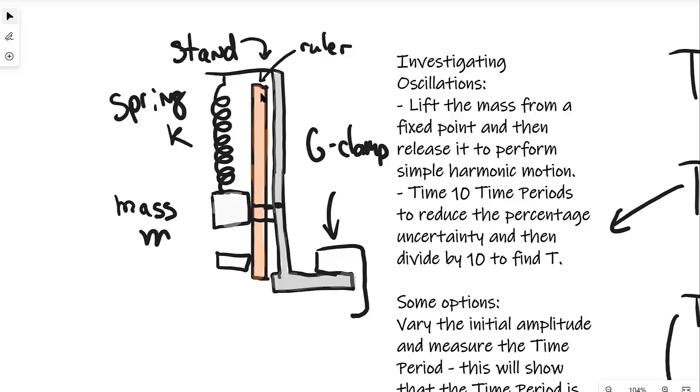Now how can we investigate oscillations with this setup? First of all we're going to lift the mass from that fixed point and then release it to perform simple harmonic oscillations. We could measure the time period T and this is really important because any time in oscillations when we have to investigate timing, the time period will be quite small for us to measure directly. So what we do is measure 10 time periods to reduce the percentage uncertainty and then divide our answer by 10.